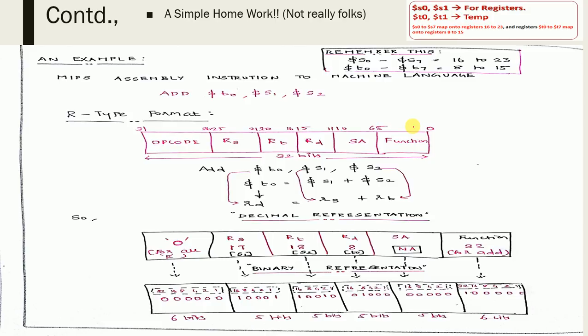Let's translate a MIPS instruction to machine language to understand how the computer interprets it. Throughout this subject, registers s0 to s7 map to numbers 16 to 23: s0 maps to 16, s1 to 17, s7 to 23. Registers t0 to t7 map to numbers 8 to 15: t0 maps to 8, t7 to 15. Do not forget these mappings.